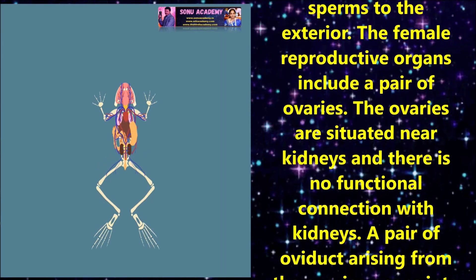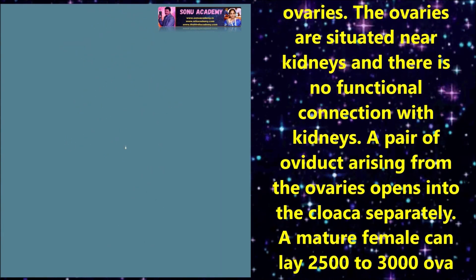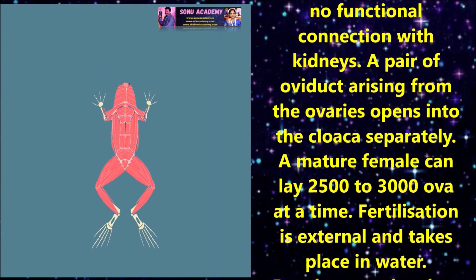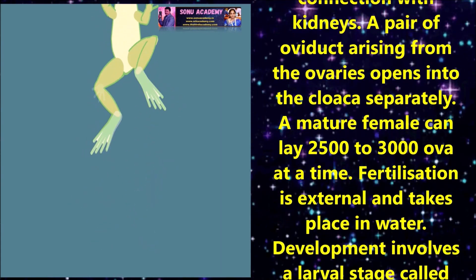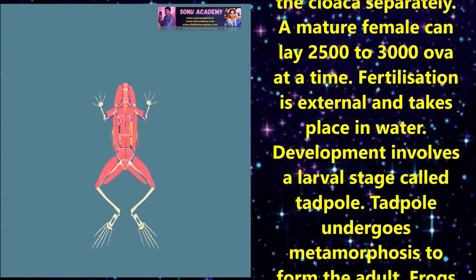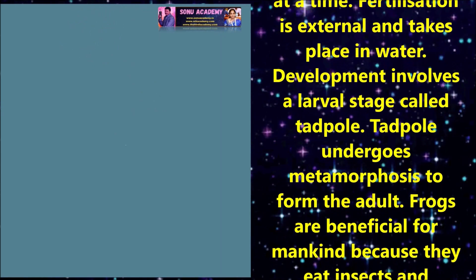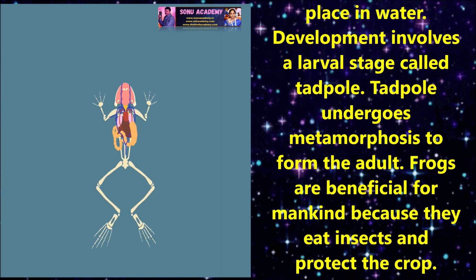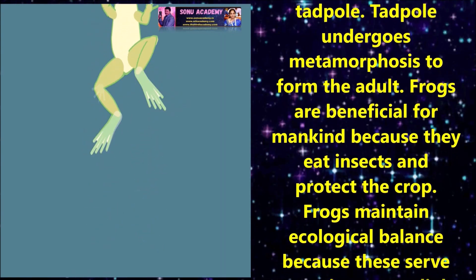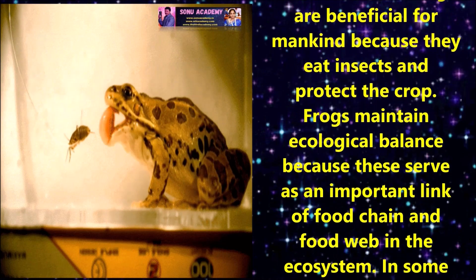The female reproductive organs include a pair of ovaries situated near the kidneys, with no functional connection with the kidneys. A pair of oviducts arising from the ovaries opens into the cloaca separately. A mature female can lay 2,500 to 3,000 ova at a time. Fertilization is external and takes place in water. Development involves a larval stage called a tadpole. The tadpole undergoes metamorphosis to form the adult frog.